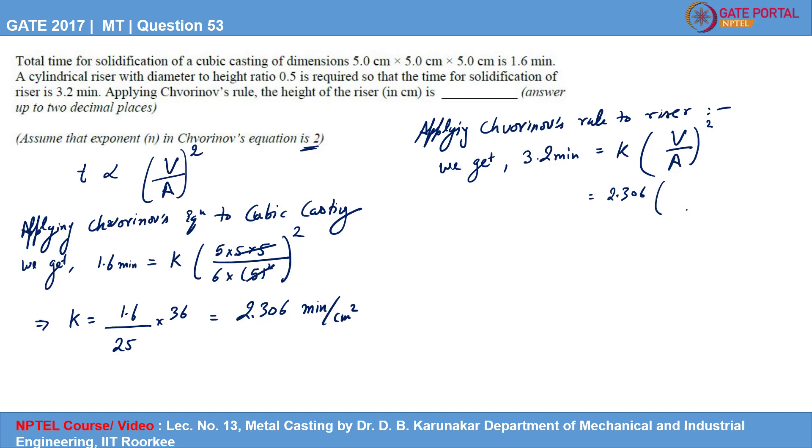What is the volume? Volume of cylinder. We have a cylindrical riser of diameter D and height H. And also it is given that the D by H ratio is 0.5. Now the volume of cylinder is nothing but pi by 4 D square H divided by, what is the total surface area of the cylinder? Total surface area of the cylinder is nothing but pi D H plus the two circular surfaces: 2 pi by 4 D square. That is the total surface area of the cylindrical riser.